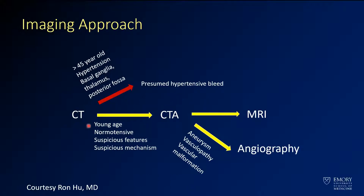If the patient has any suspicious features — they are young, have normal blood pressure, or a suspicious location — they should probably move on to CTA. If CTA finds something, you are almost certainly going to proceed to catheter angiogram or surgery. If CTA is negative, you may think about going on to MRI.